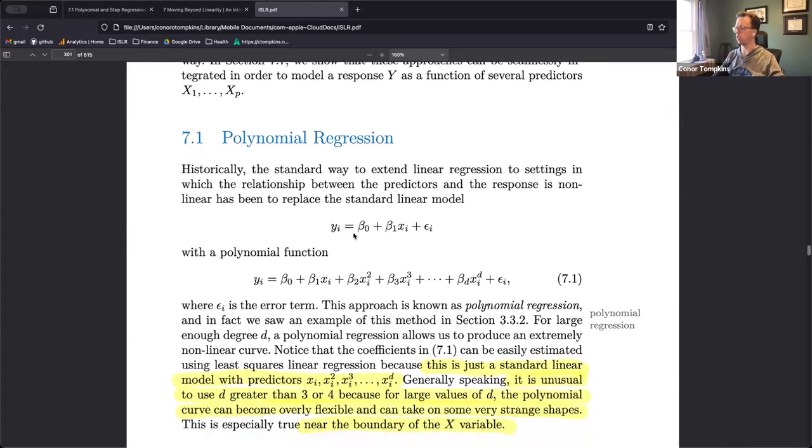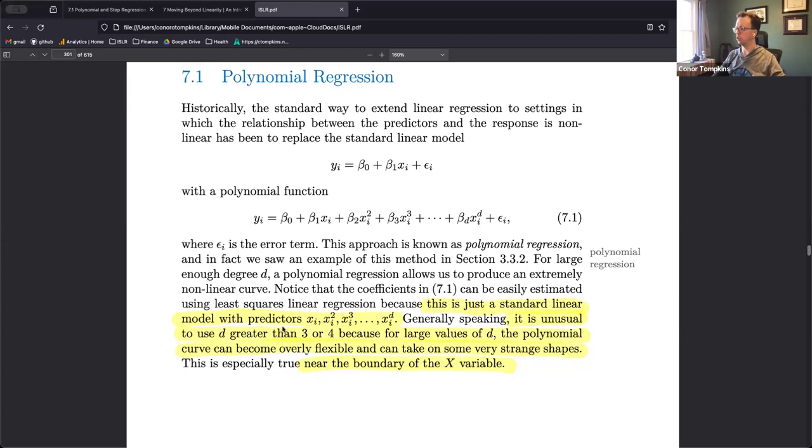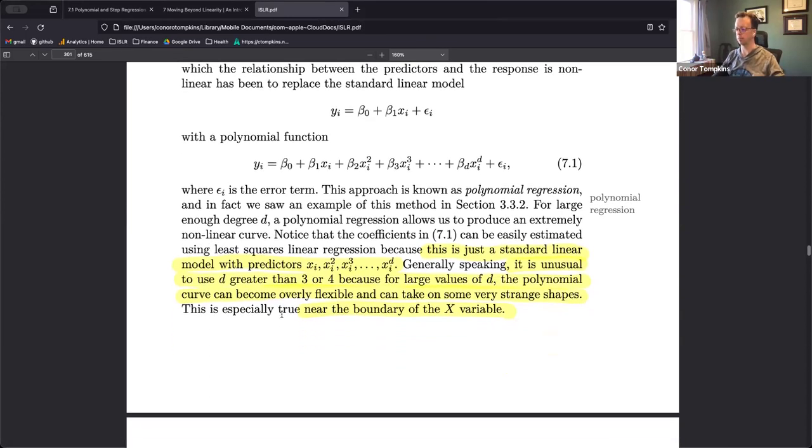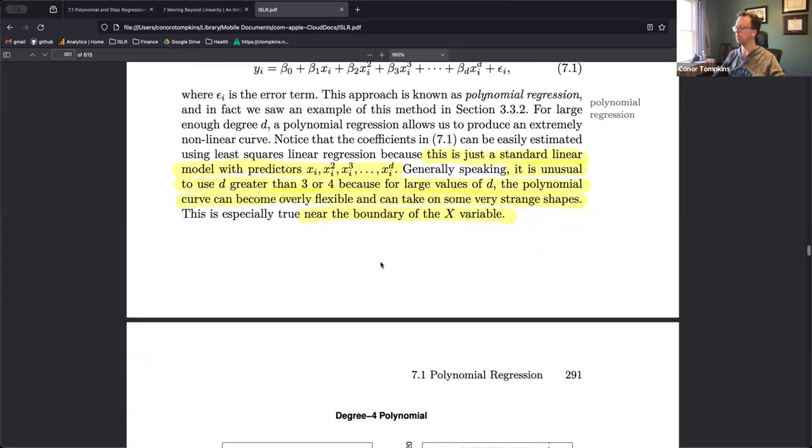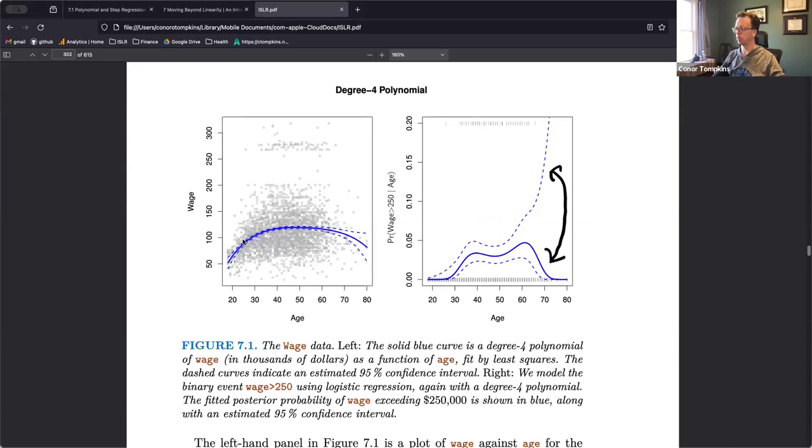So here we look at polynomial regression. We choose some power and expand the formula up to that, so up to D there. It's just multiple polynomial regression with those added predictors. This is like a classic method but you get very strange behavior on the boundary of the X variable, so you want to keep the D power low because things can get funny.